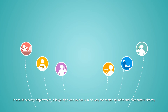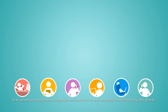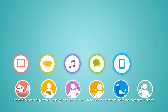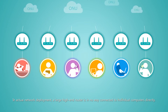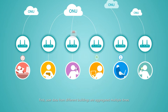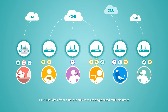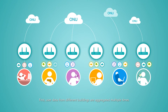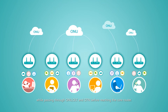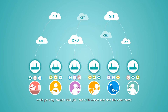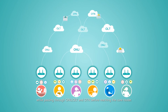In an actual network deployment, a large high-end router is in no way connected to individual computers directly. First, user data from different buildings are aggregated multiple times by passing through ONU, OLT, and OTN before reaching the core router.